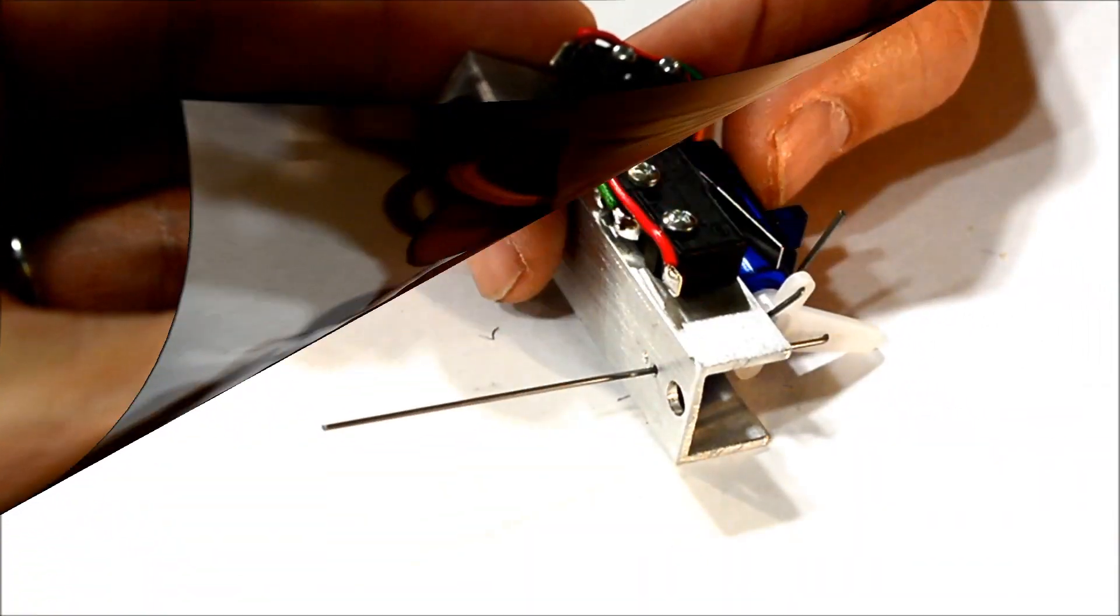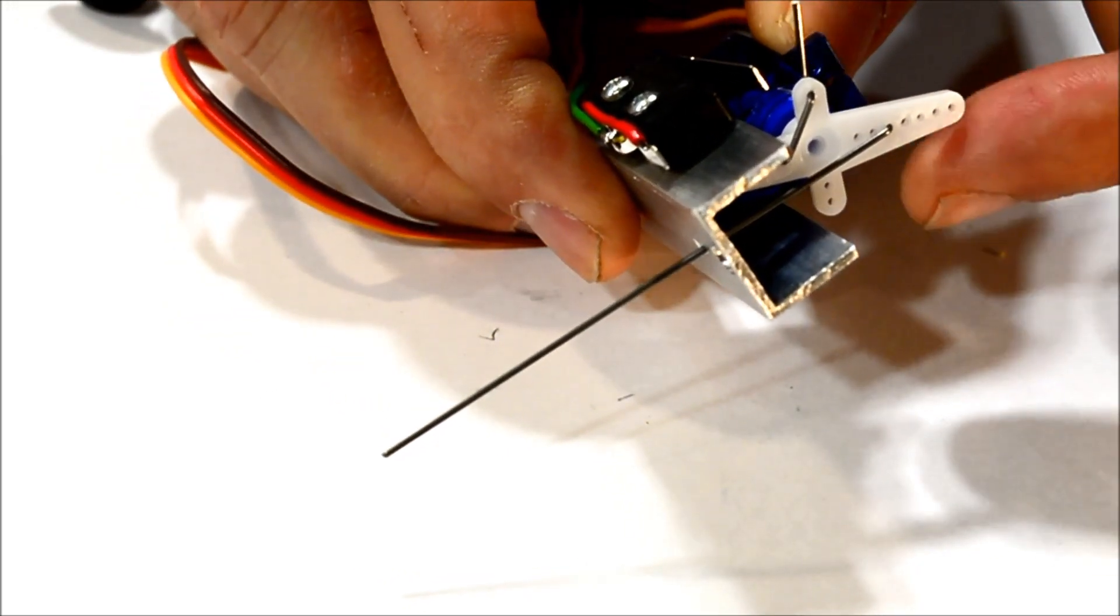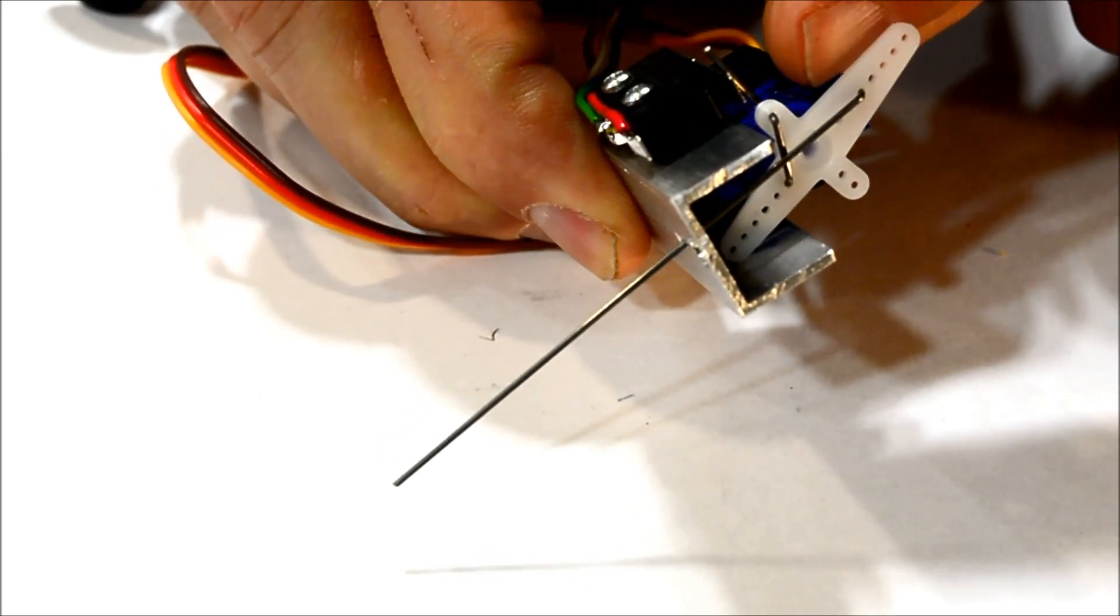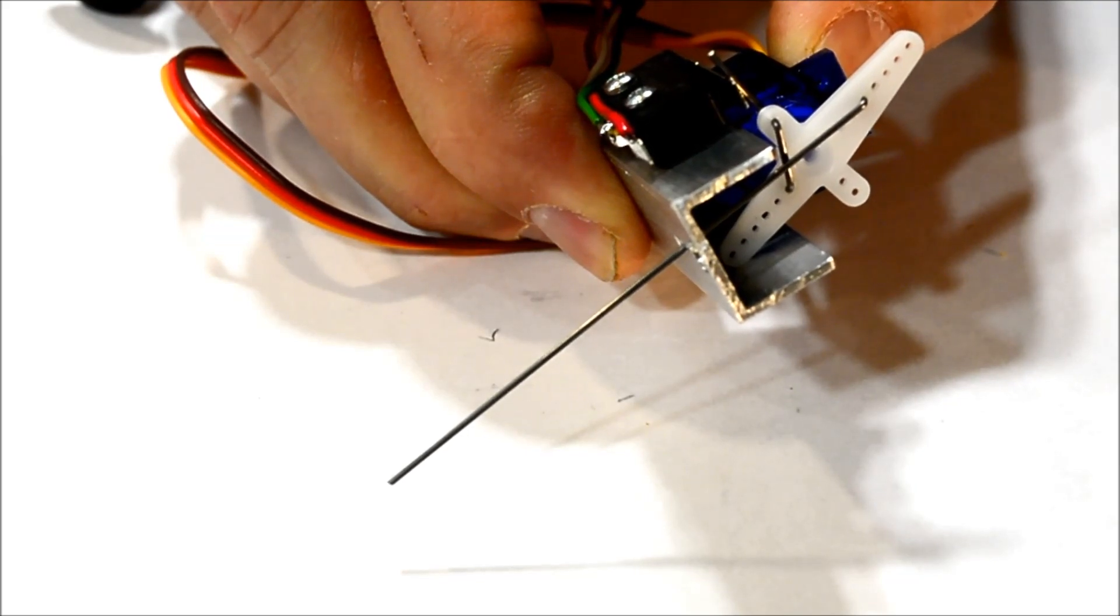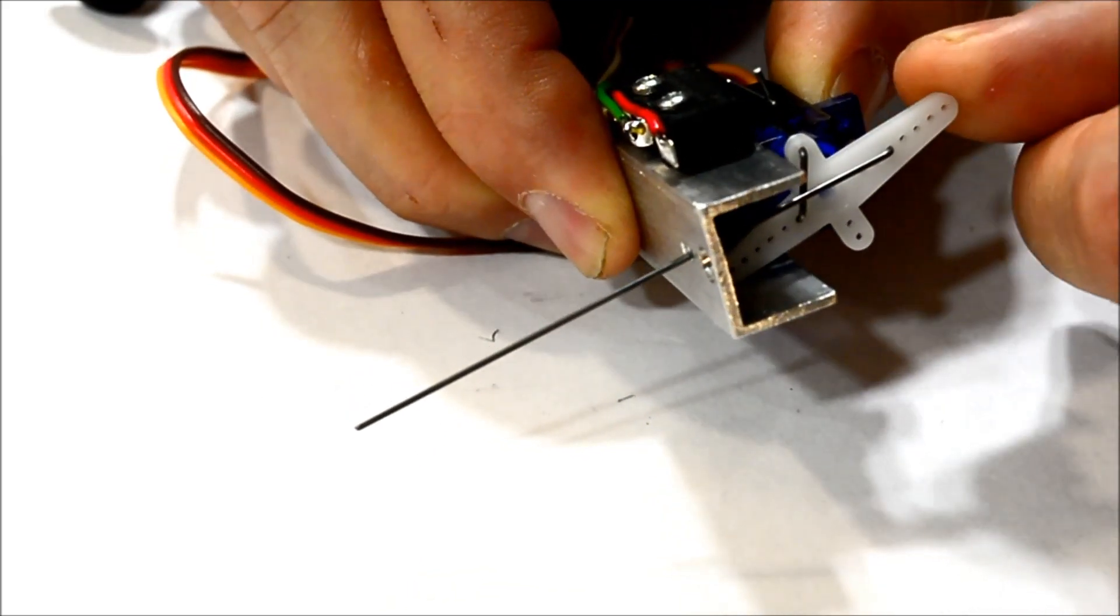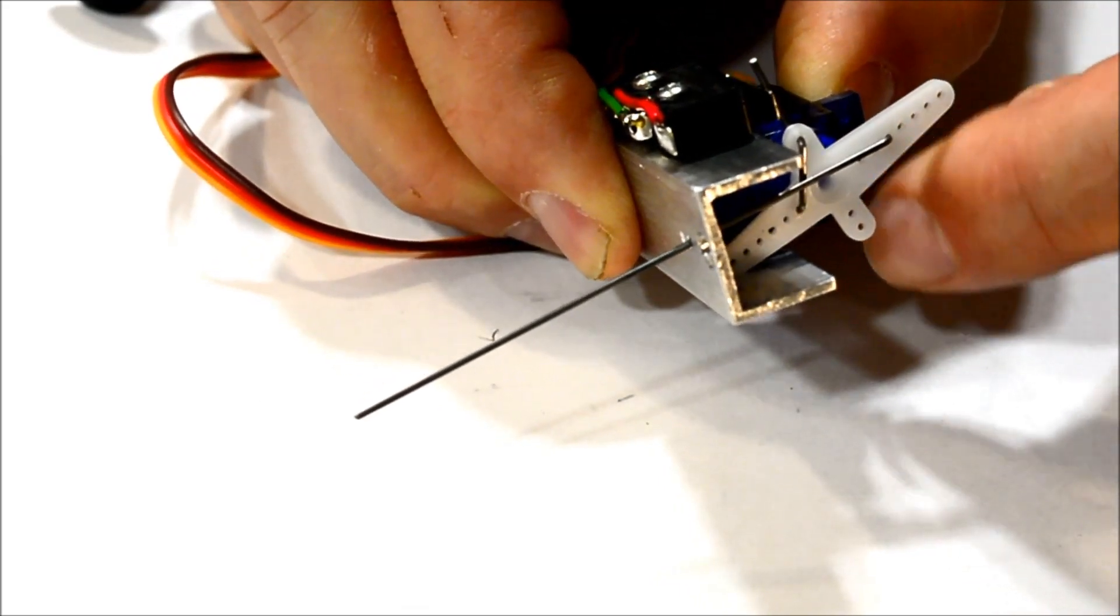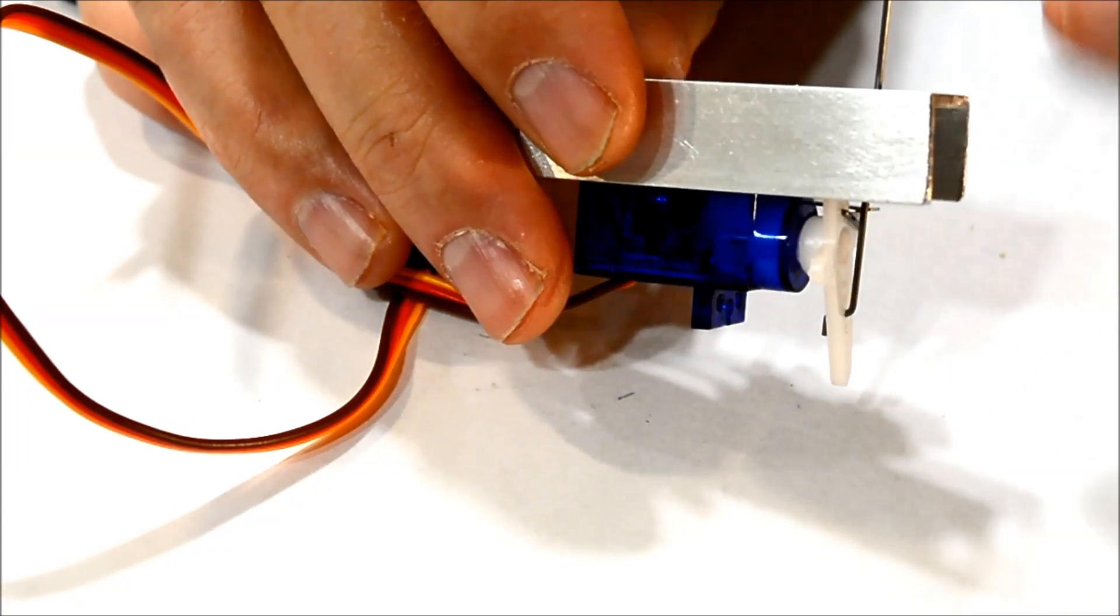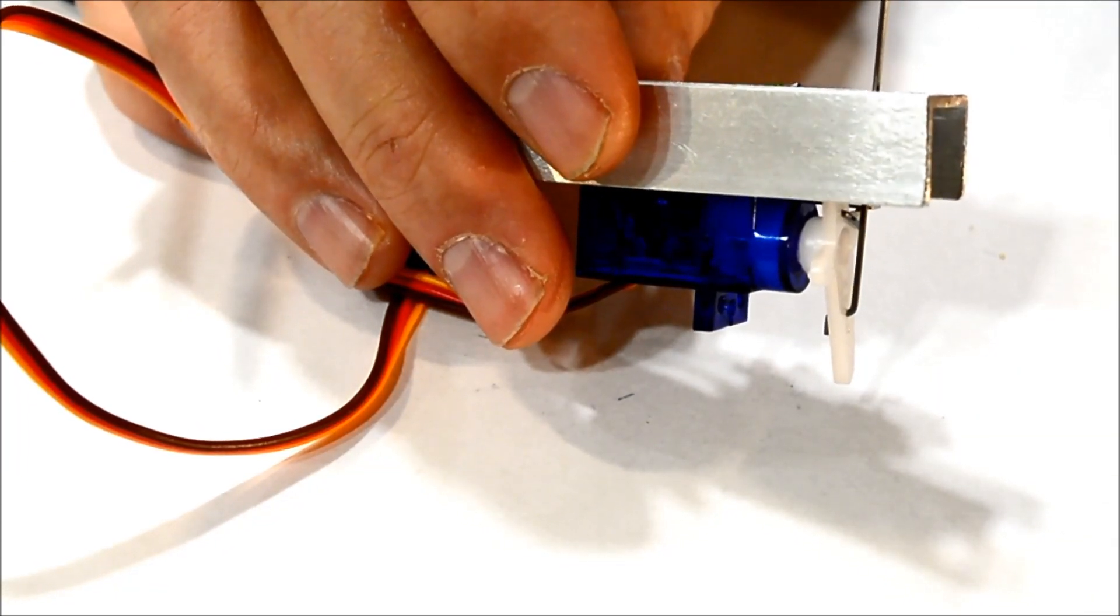And then we simply press fit the servo and we make sure that we've got it positioned correctly front to back. Now that we've got everything put together, see as the servo actuates, the little bar on the horn comes out and moves the microswitch to switch the frog polarity. And just as easy as that. And then now we just mount it up underneath with two screws and plug everything in and we're ready to go.